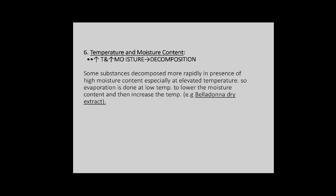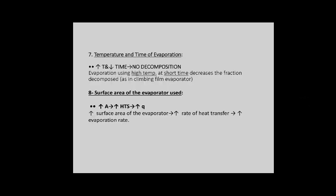Number five: temperature and moisture content. Increased temperature leads to increased moisture, which leads to faster decomposition — for example, belladonna dry extract, where raised temperature causes moisture increase and decomposition of active constituents. Number six: temperature and time of operation. Increasing temperature decreases time, so no decomposition occurs. We use a flash evaporator or a climbing film evaporator.